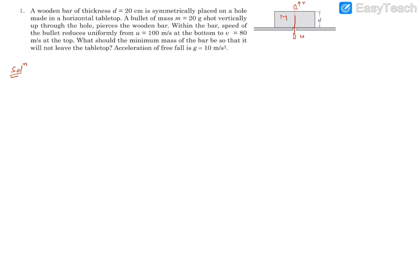When the bullet goes inside, it experiences a resistance force causing deceleration or retardation acting downward. If you look at the bar, the bar will experience a force in the upward direction. This force is going to cause the lifting of this bar if its mass is not significantly higher.